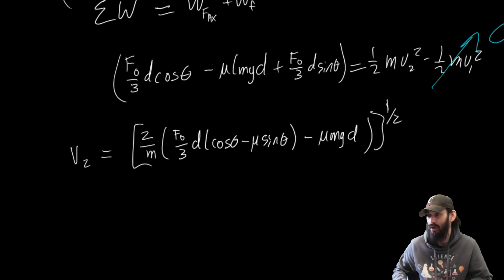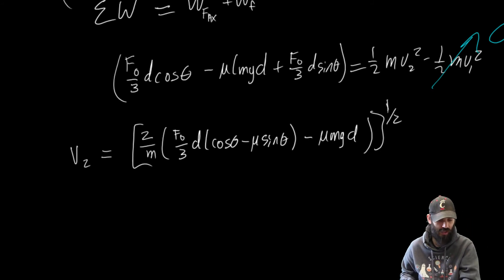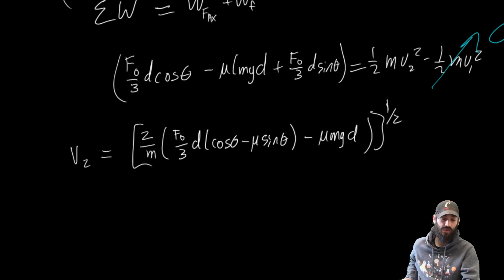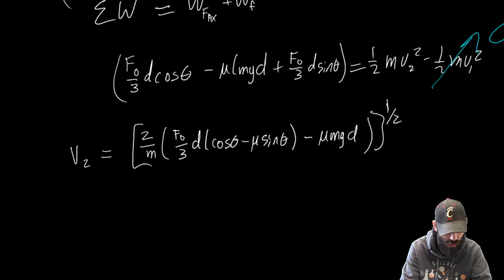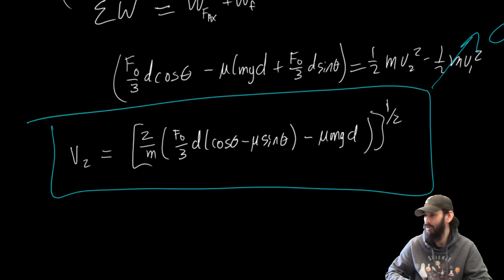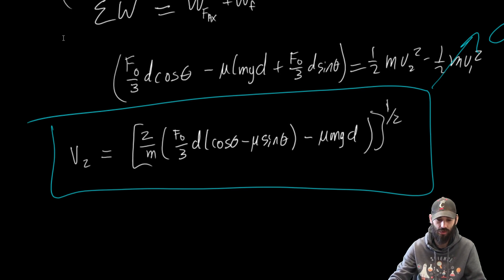If we want, we could apply dimensional analysis. Everything has units of work under the integral, so work divided by mass gives m² per second squared to the one-half, which is consistent. That's it for this video — I'll post these solutions and also the solutions to the other question. Take it easy.